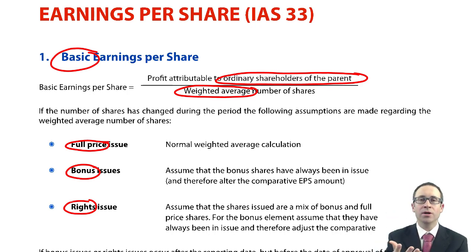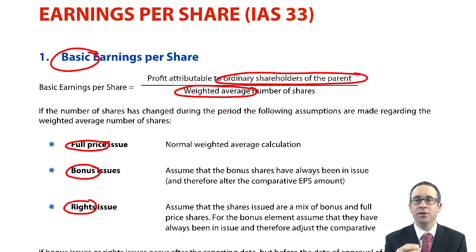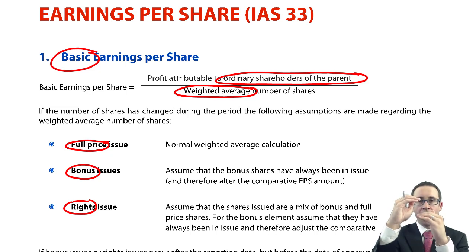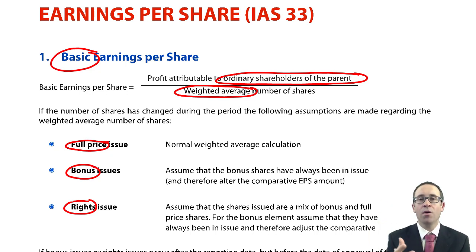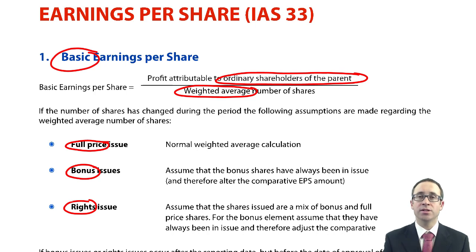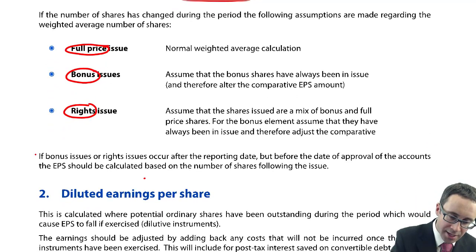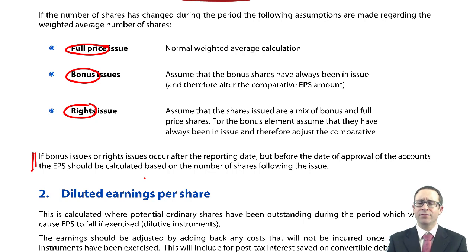In terms of your rights issue, that was the complex one, where you needed to work out your rights issue fraction. I'm not going to go into the complexities of working out the rights issue fraction — I just think that is beyond the scope of what we cover within P2. The key point is to understand that a rights issue is a mixture of your full price issue and your bonus issue, because with a rights issue you issue shares at slightly below full market price. So the business does receive some cash, but there is also an element of free shares issued. So you need to calculate the number of free shares, which you do by working out that rights issue fraction. Don't forget that we also need to restate any prior year comparatives.